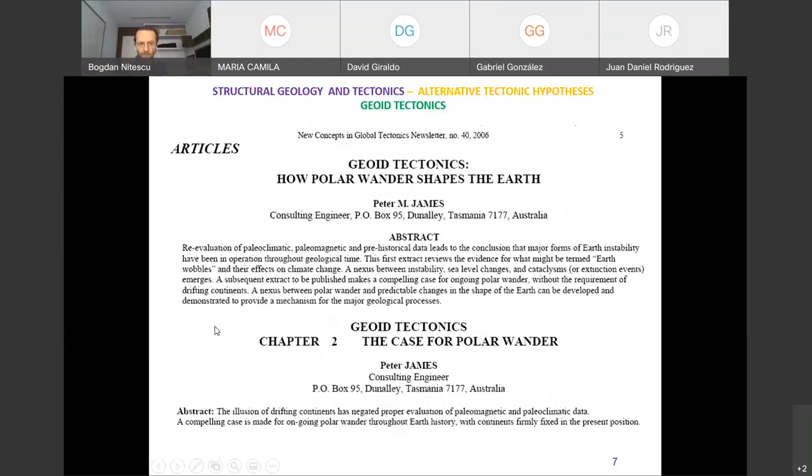And he published a series of articles in this journal called new concepts in global tectonics. Now, you can see new concepts in global tectonics has been set up by these people who want to discuss alternative hypothesis and they cannot publish their papers in the main official journals. And then they say, okay, let's create a journal called new concepts in global tectonics. And here we can publish, like, have peer reviews and publish alternative hypotheses. So he published a series of papers, which he called geoid tectonics.